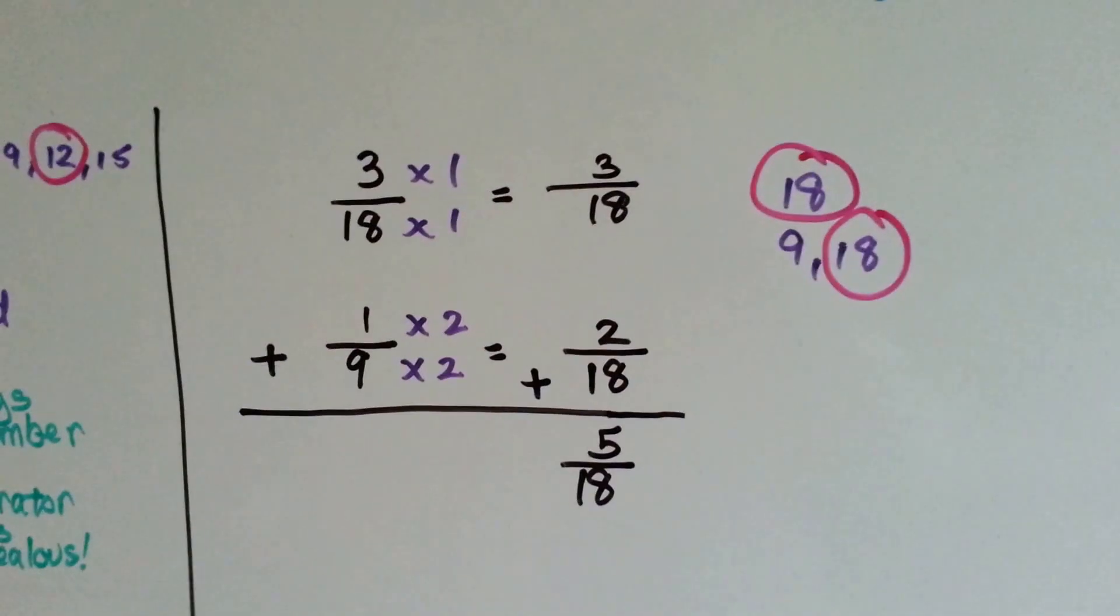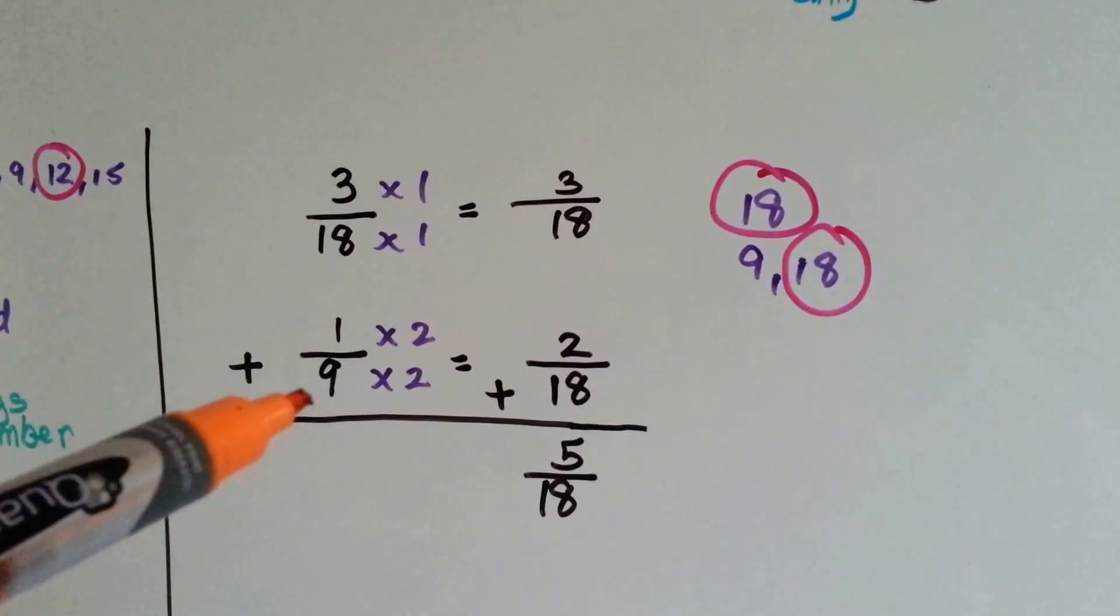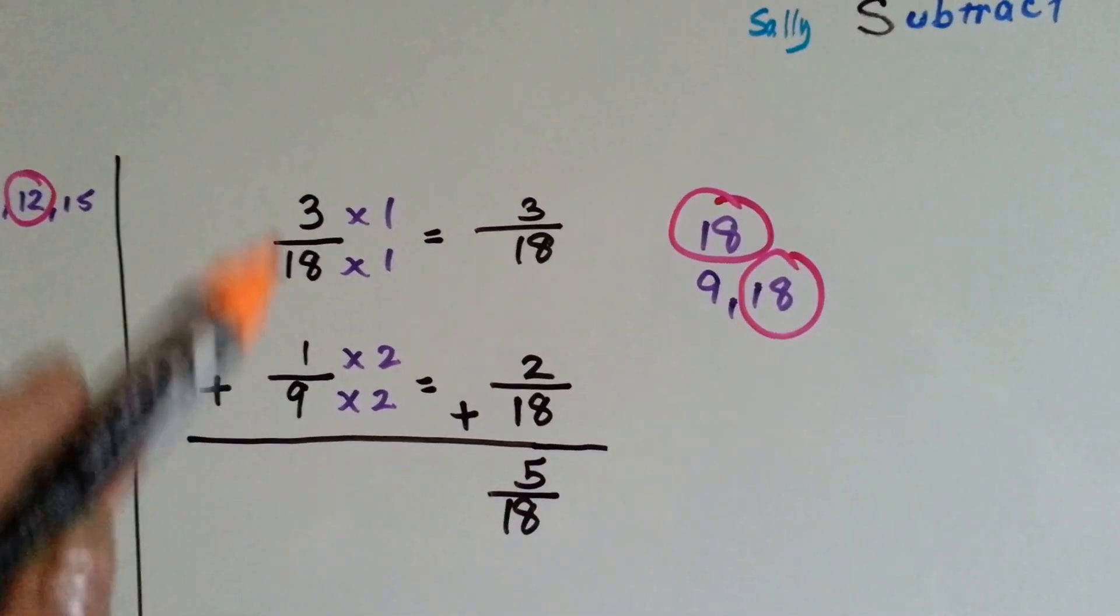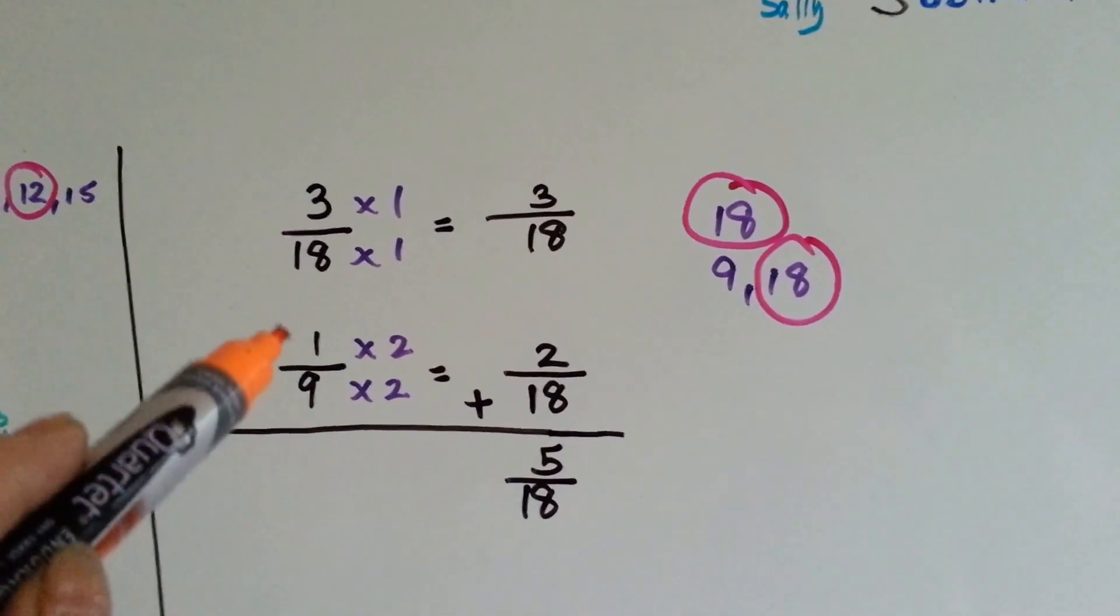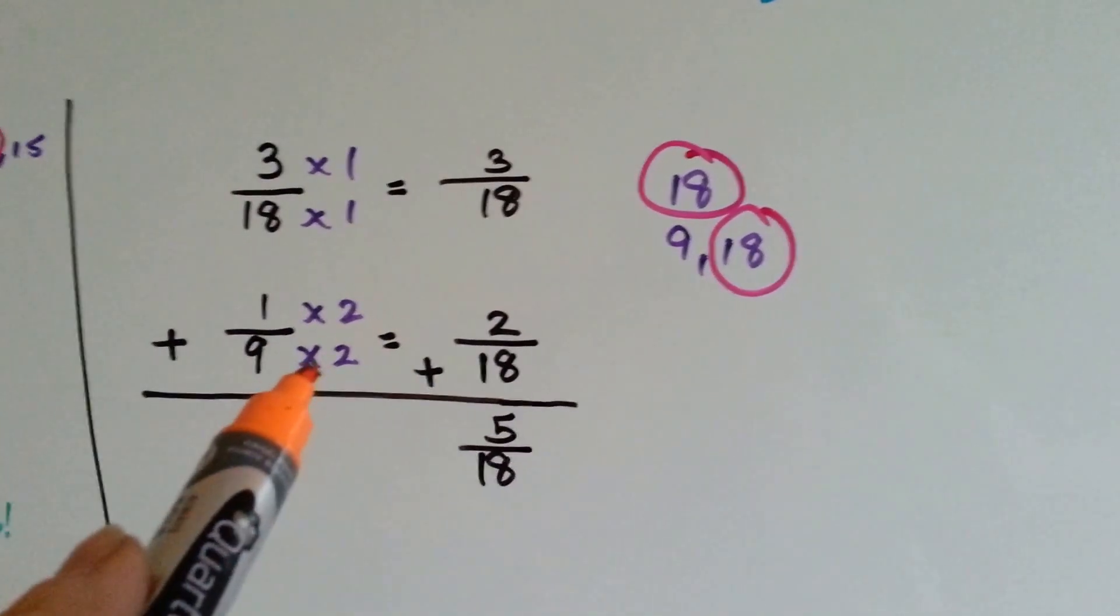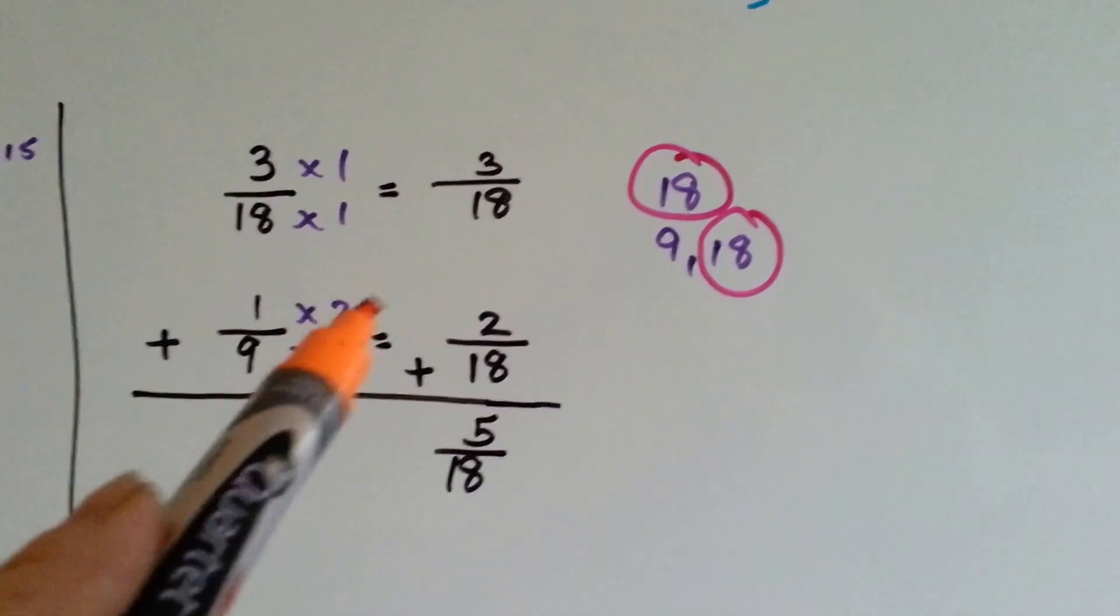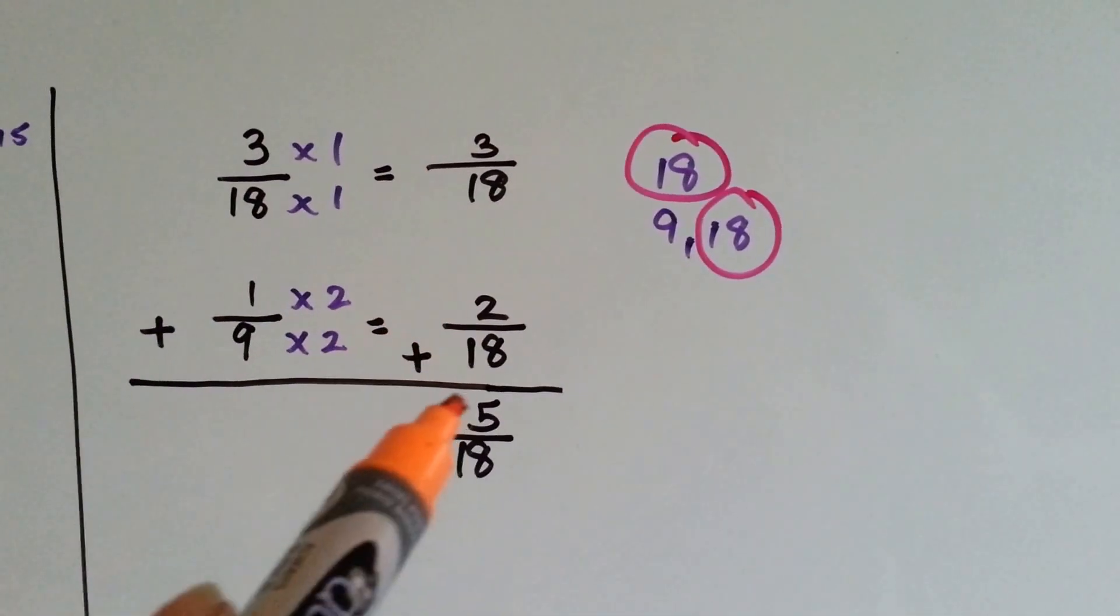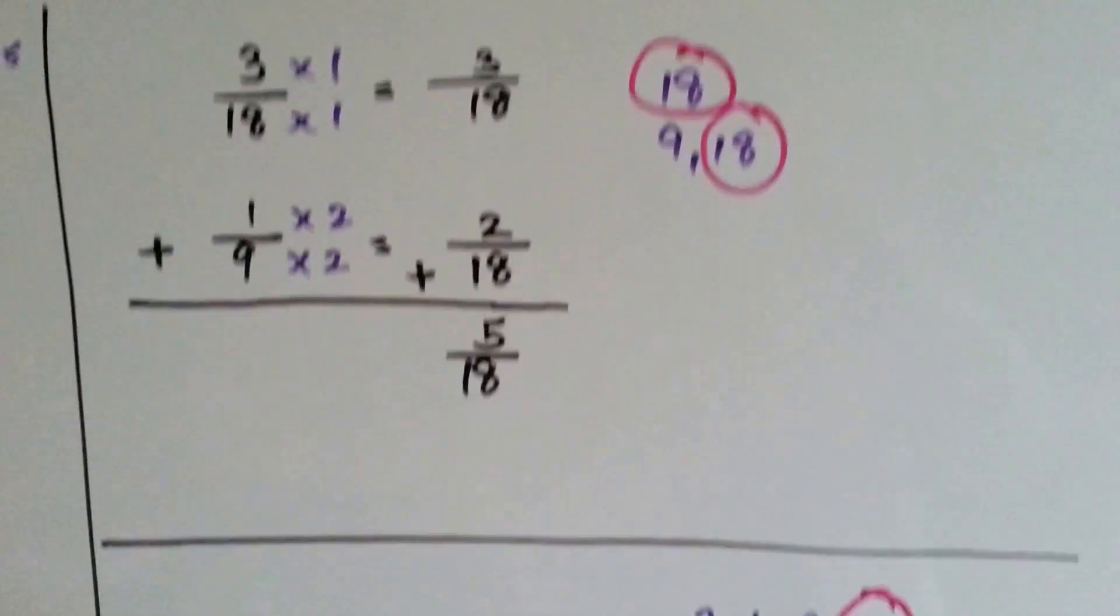Alright, now we're going to add 3/18 and 1/9. We quickly see that they can meet at 18's house, so 18's already home and stays 3/18. 9 needs to be multiplied by 2 to become 18. 1 is jealous, it gets multiplied by 2, and we add the 3 and the 2 and get 5/18.